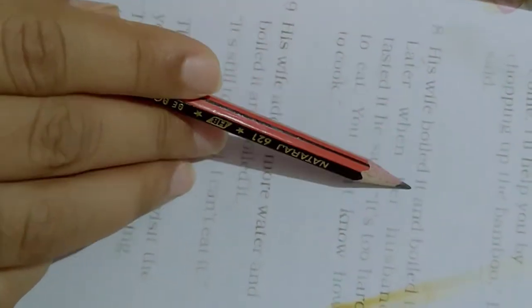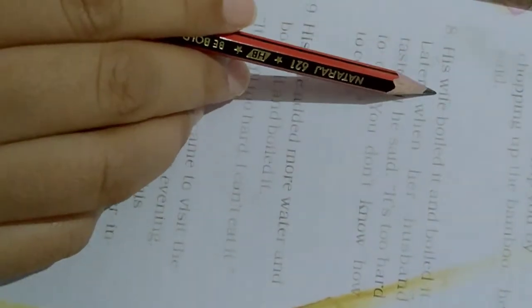His wife boiled it and boiled it. Later when her husband tasted it, he said it's too hard to eat, you don't know how to cook. So his wife boiled it again and again, and after boiling it for so many hours she gave it to her husband. He said it's too hard, how can I eat it?